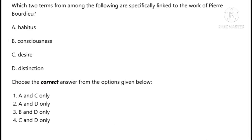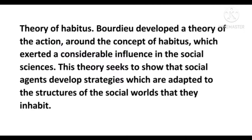The next question asks: which two terms from the following are specifically linked to the work of Bourdieu? The right answer is options A and D. In the previous question, we discussed distinction as a term by Bourdieu. The theory of habitus is also a term by Bourdieu — it is a theory of action. So option number two is the right answer.